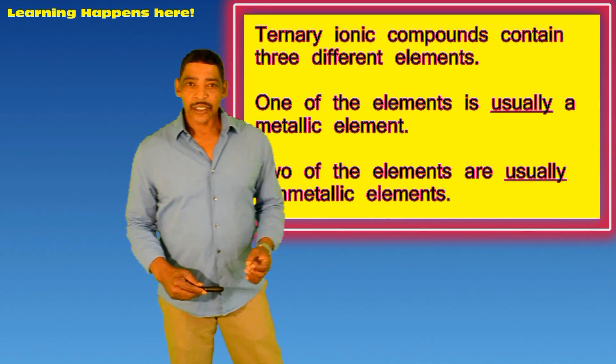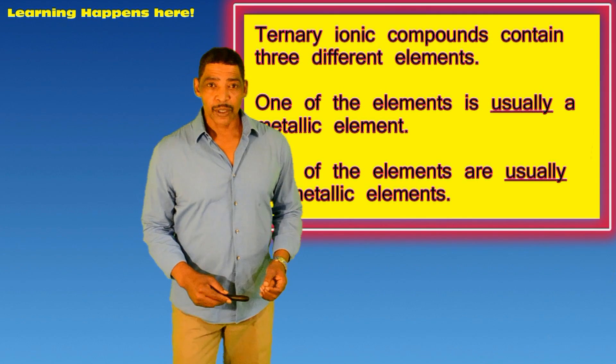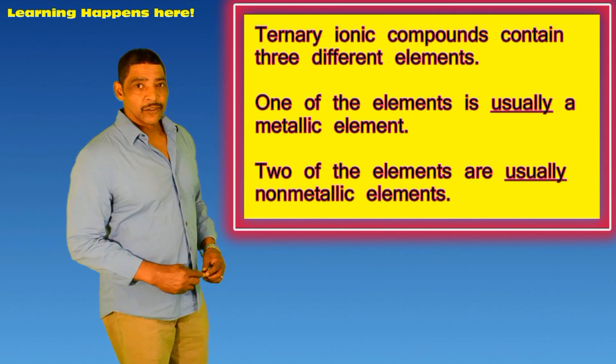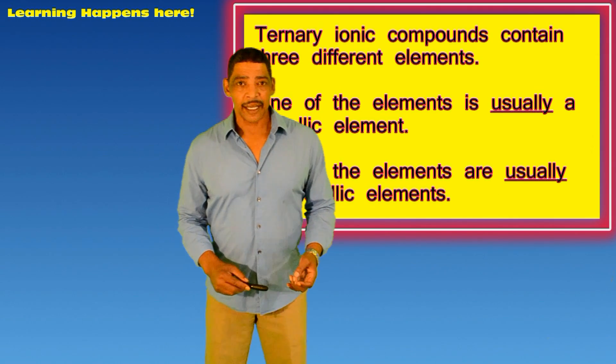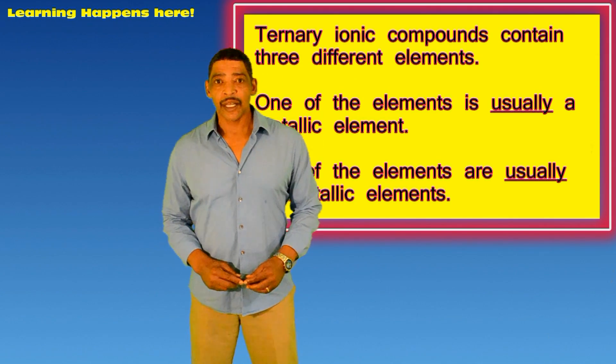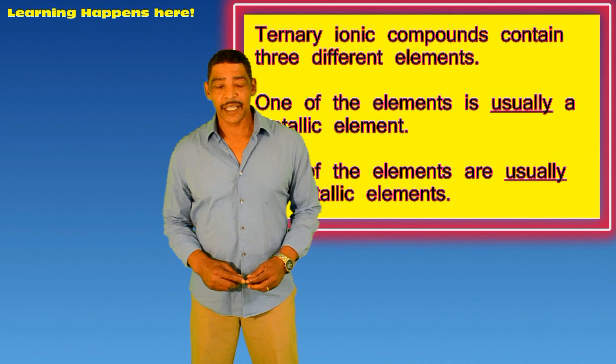A ternary ionic compound is composed of three different elements, where one of the elements is usually metallic and the other two elements are usually non-metallic.